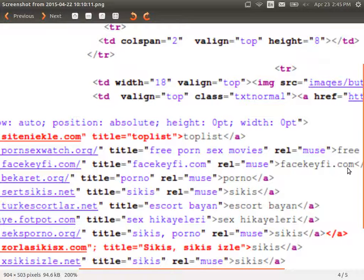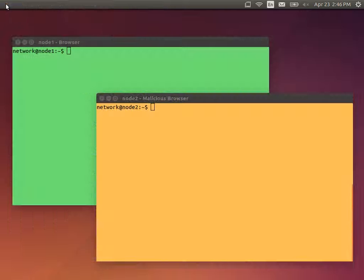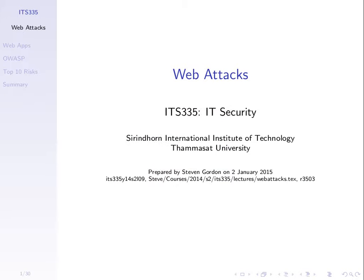Someone had compromised the SIT website. Someone had, somehow, inserted these links inside the SIT front webpage. They've been removed — we let the computer centre know and they've been removed since then. The topic of this attack is to look at how attacks occur on websites and how someone may compromise a website and insert information onto a webpage that shouldn't be there, and even do more dangerous things: delete data, steal data, and do different attacks on websites.